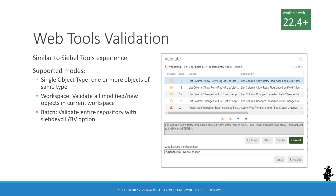The 22.4 version of Siebel Web Tools introduces the very familiar object validation that we know from Siebel Tools. Developers can validate one or more objects of the same type, or an entire workspace, or invoke a repository-wide validation run from the command line.